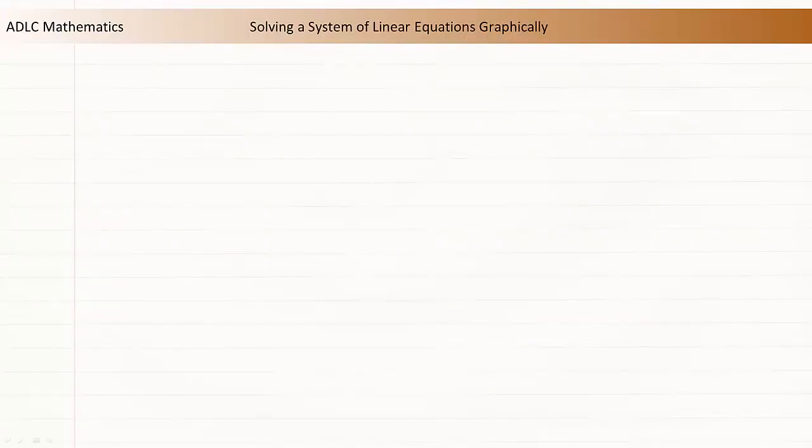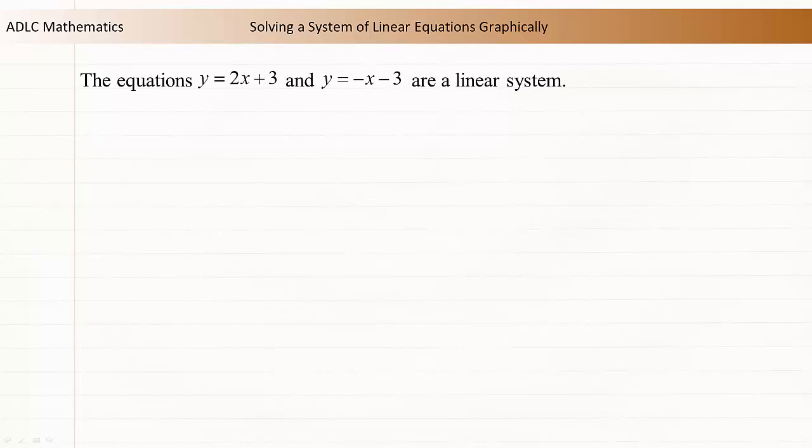A system of equations is a collection of equations that involve the same variables. The equations y equals 2x plus 3 and y equals negative x minus 3 are a linear system because both equations use the variables x and y.